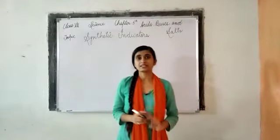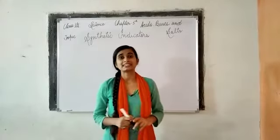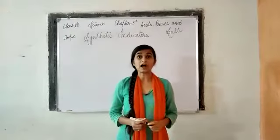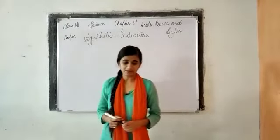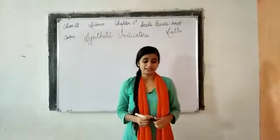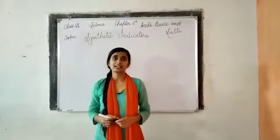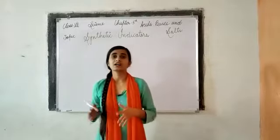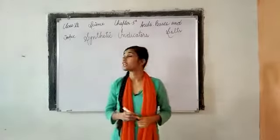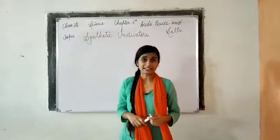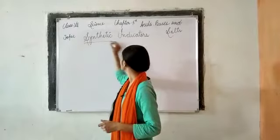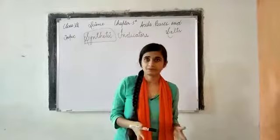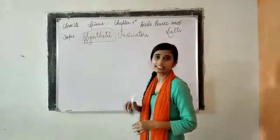Now we are going to discuss the second type of indicator, that is the synthetic indicator. This is also called the man-made or artificial indicator — an indicator which is made by humans in the laboratory with the help of chemicals. Chemical ke use se bana hua indicator ko hi bolte hain synthetic indicator. The name itself represents its meaning: synthetic means banaya hua — something made artificially.